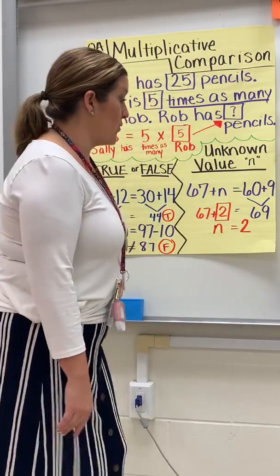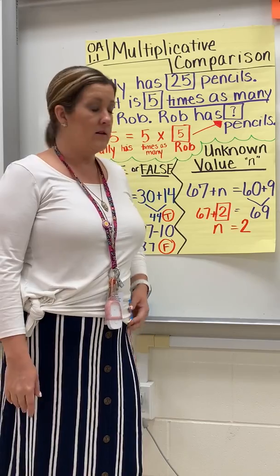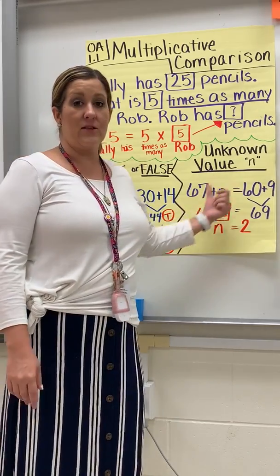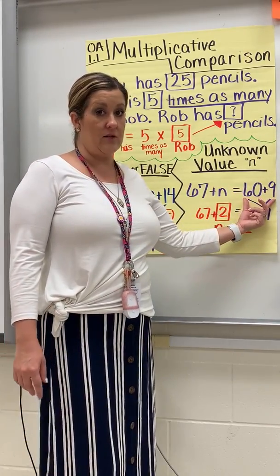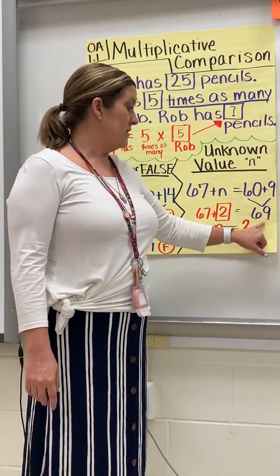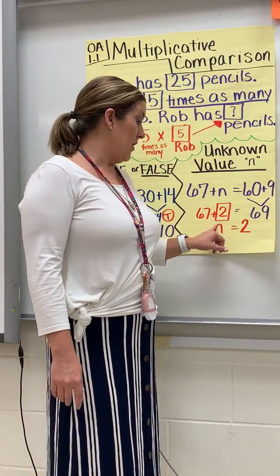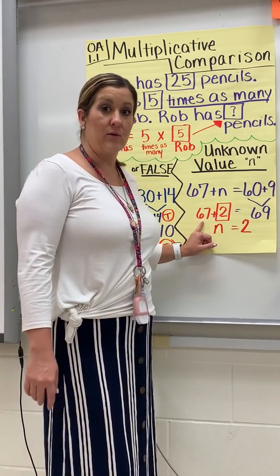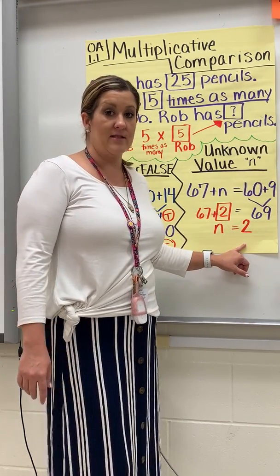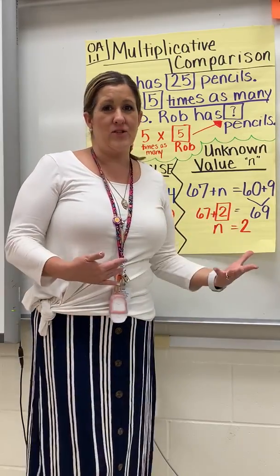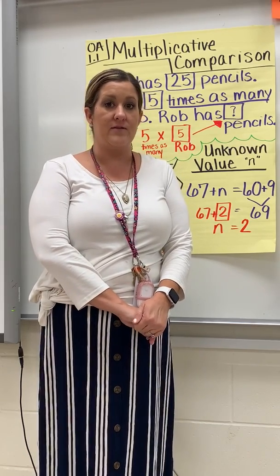The last thing we're going to work on is solving for an unknown value, such as the letter N. Just like the true and false equations, we have equations set up where they need to perform an operation. So 60 plus 9 is 69 — 67 plus what unknown value would make this equation equal? They should be able to figure out that N would be 2 in this case. It does get a little more challenging than just this, but this is a basic overview of what they'll be working on this week.